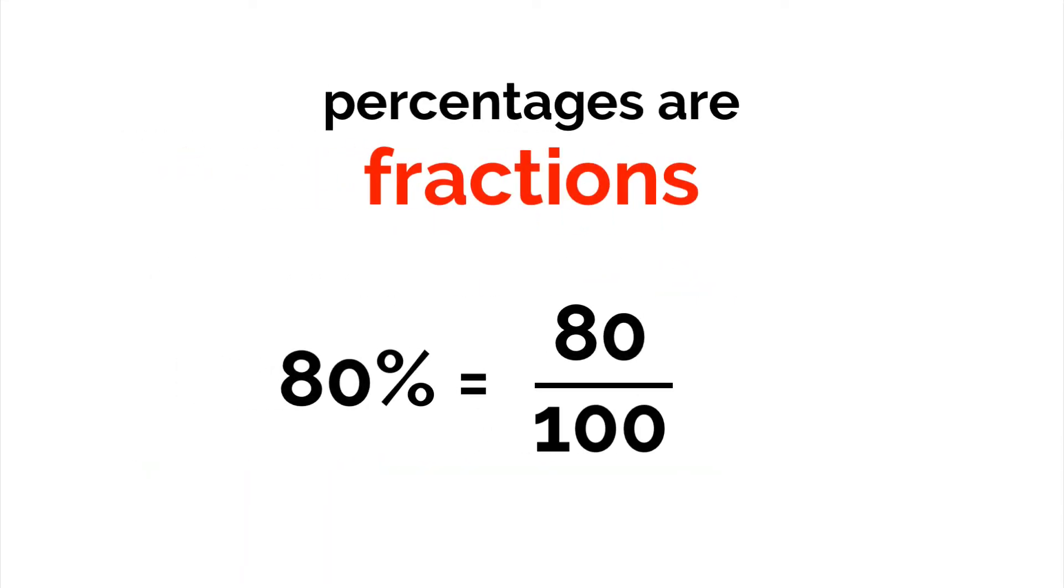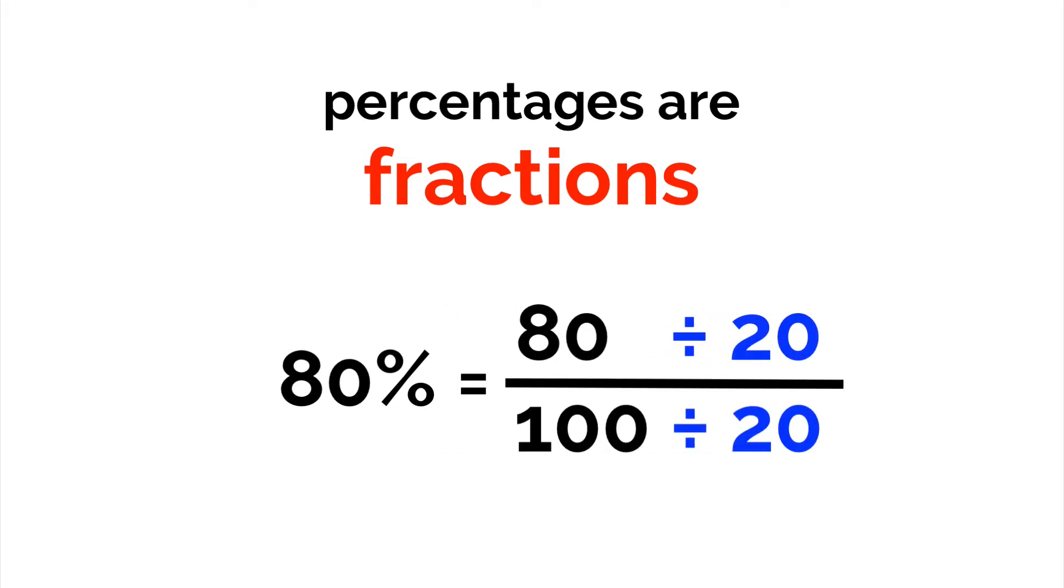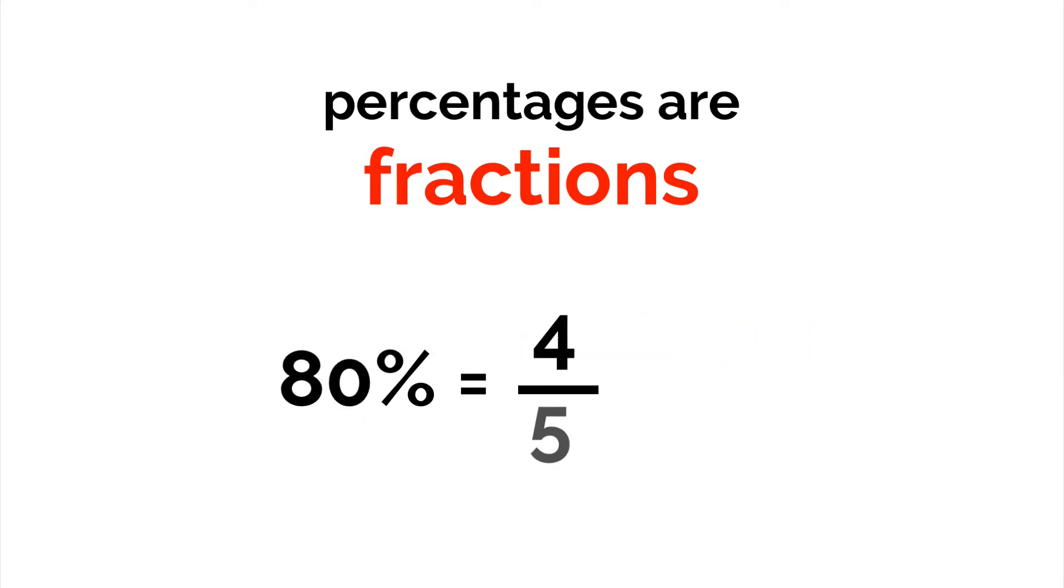In this way, we can look at percentages as simple fractions. 80% is 80 one-hundredths. We learned how to simplify fractions, so let's divide both of these numbers by 20. We should get 4 fifths. This means that 80% and 4 fifths are equivalent. They mean the same thing.